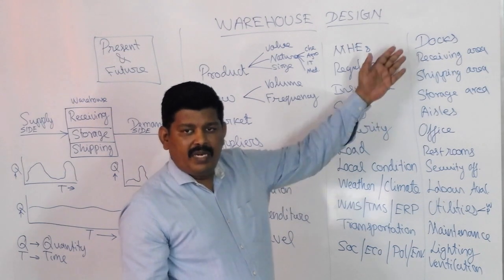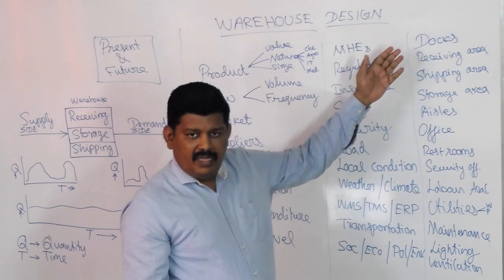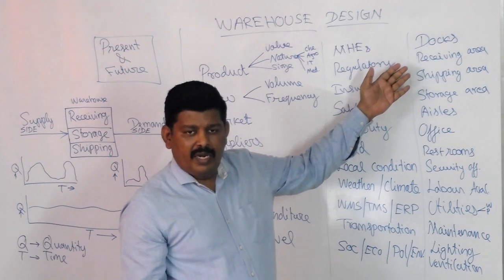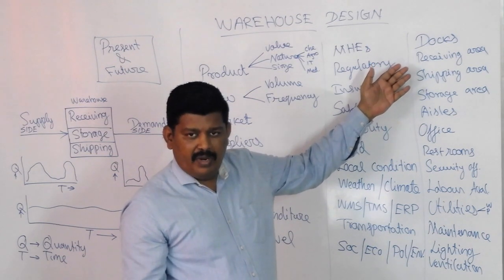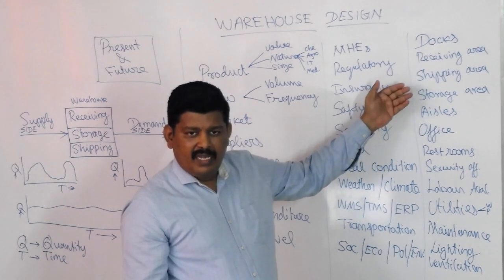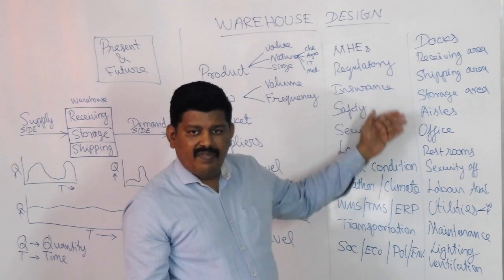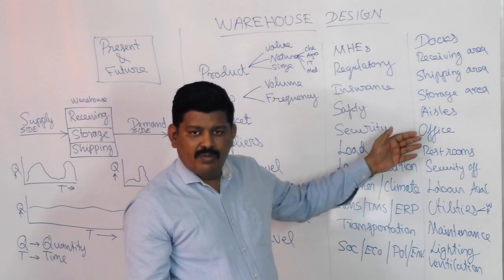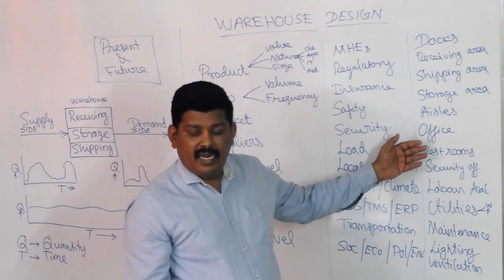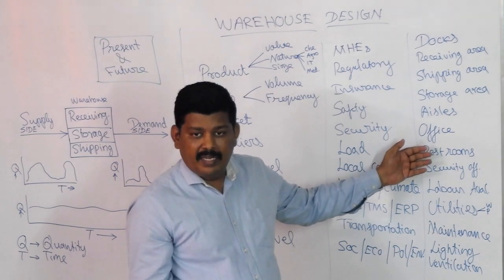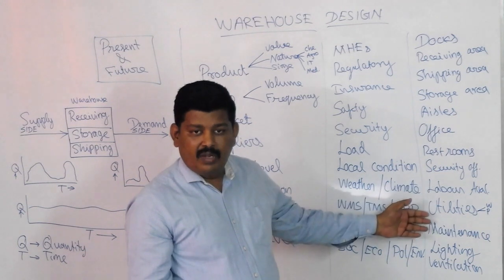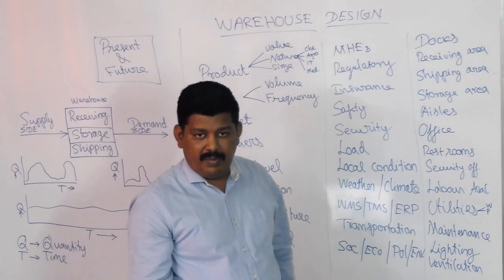Once the macro-level parameters are considered, we need to get into the various operational aspects of the warehouse: the number of docks required, how many shipping docks and receiving docks are needed, the receiving area, shipping area, storage areas, aisle requirements, office space requirements, restrooms, security office requirements, labor conditions in the locality, utilities such as water and power, maintenance requirements, and lighting and ventilation requirements.